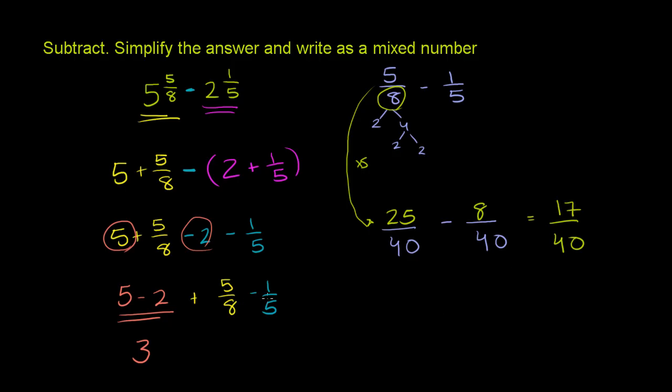So 5 eighths minus 1 fifth, which is the same thing as 25 fortieths minus 8 fortieths, is equal to 17 fortieths. And 17 is a prime number, so it's not going to share any common factors with 40. So this is as simplified as we can get.